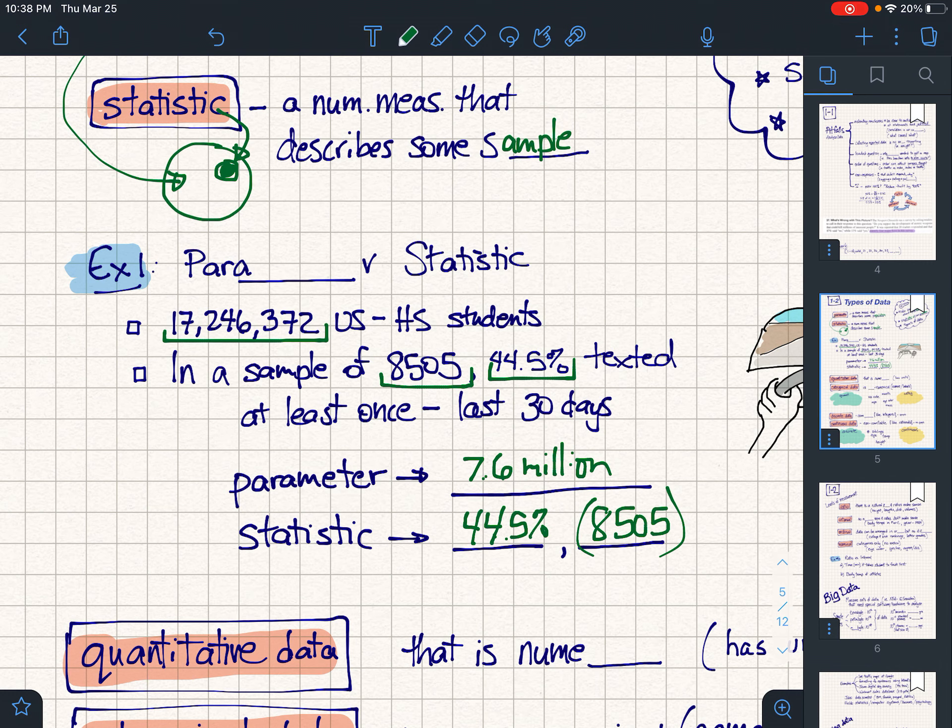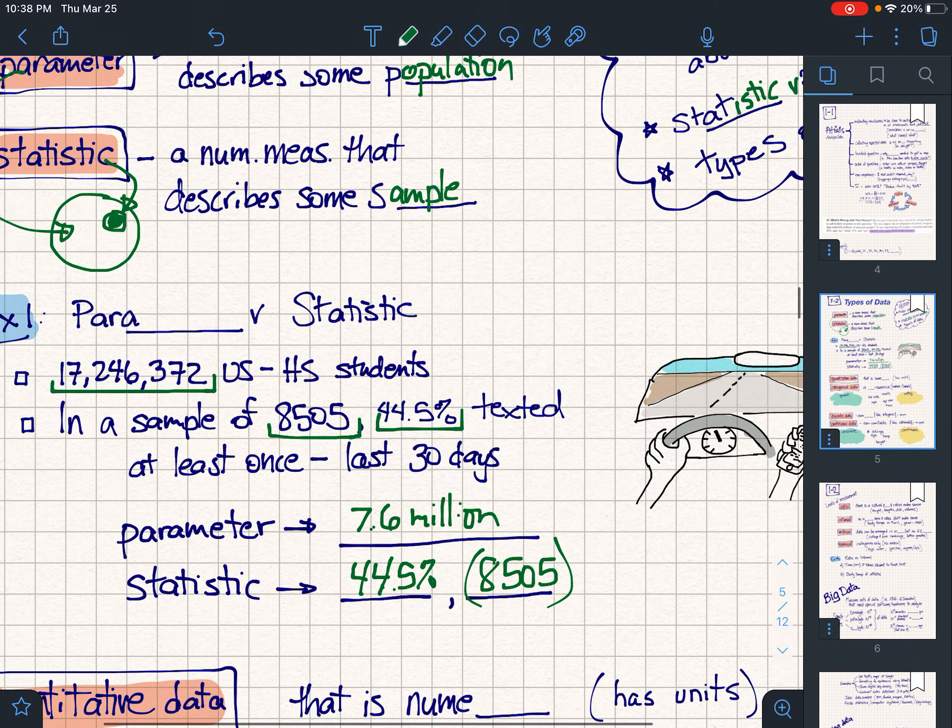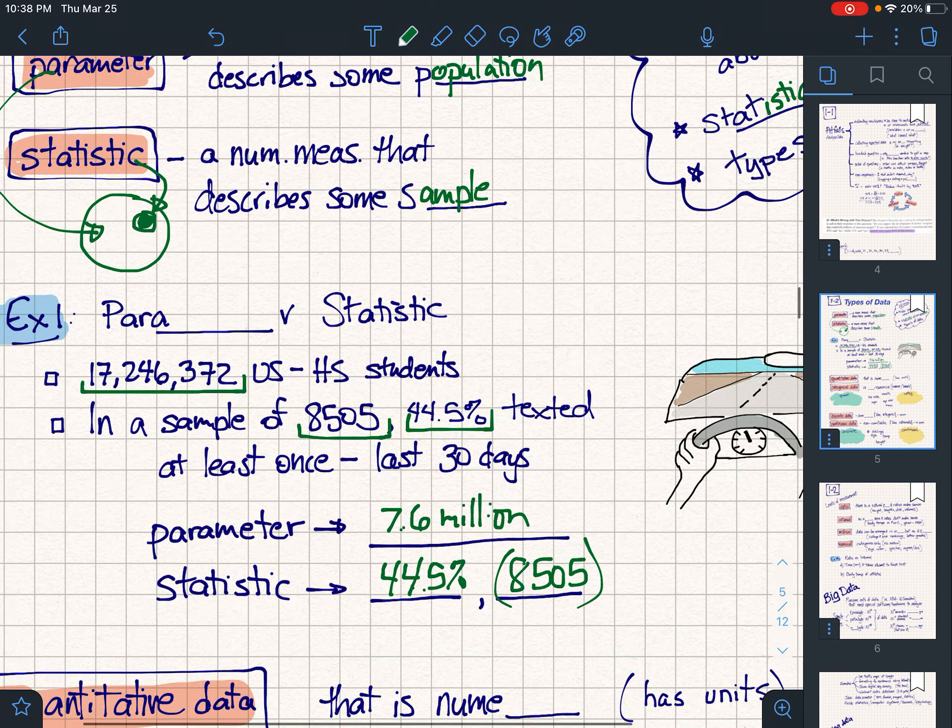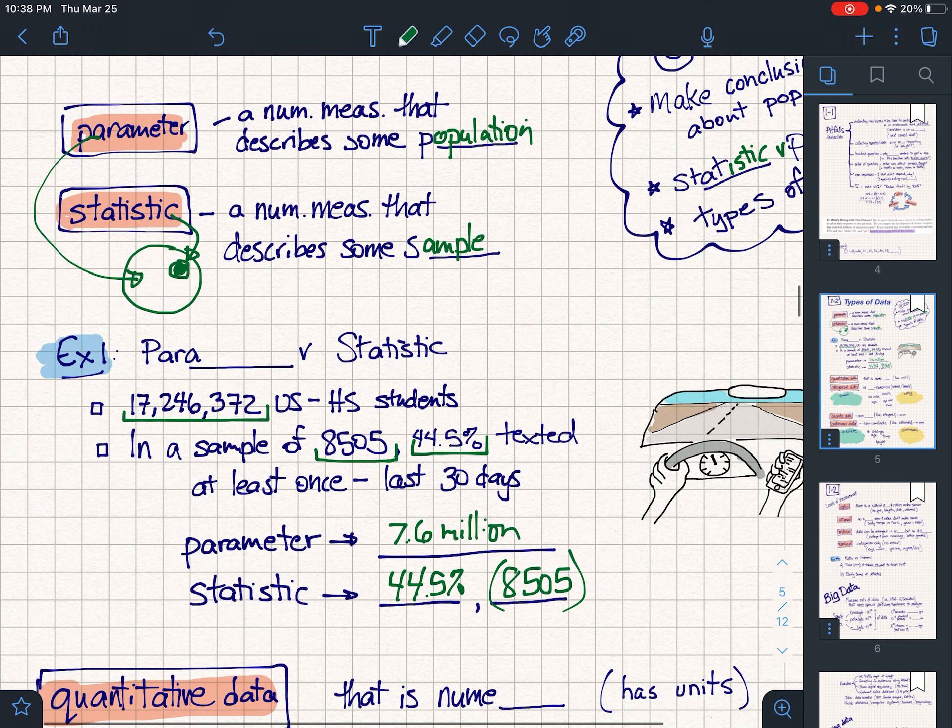A couple things: number one, I'm guessing adults it's very similar. Number two, this is why we need cars which self-drive. It would eliminate so many of these careless accidents that occur. And number three, this is why your insurance rates get to be so high because of this negligence of people as they drive.